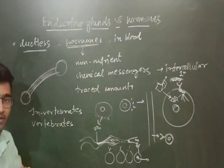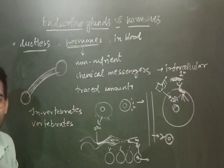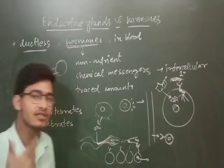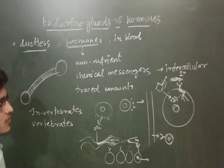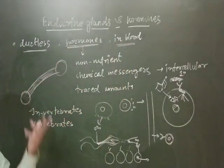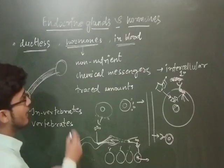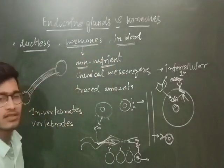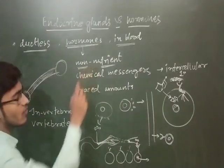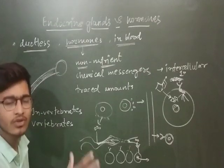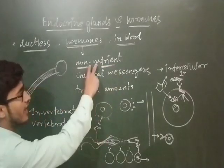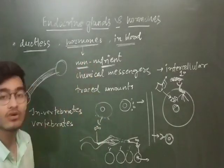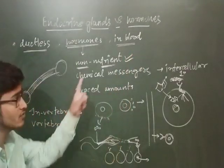Endocrine glands secrete chemical messengers called hormones. The simple definition: hormones are chemical messengers secreted by ductless endocrine glands directly into the blood. The classical definition also includes that they are non-nutrient messengers — they are not providing nutrition, but carrying a stimulus to a particular organ. This definition includes a variety of chemical species secreted by endocrine glands. The word 'non-nutrient' is very important.